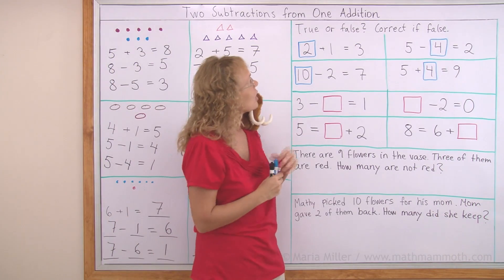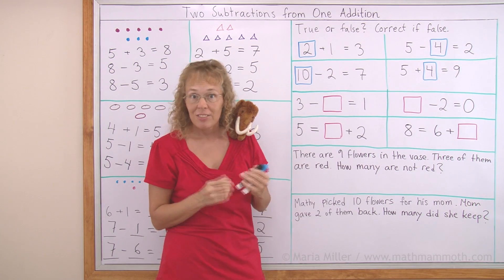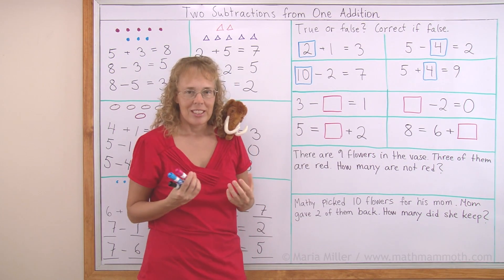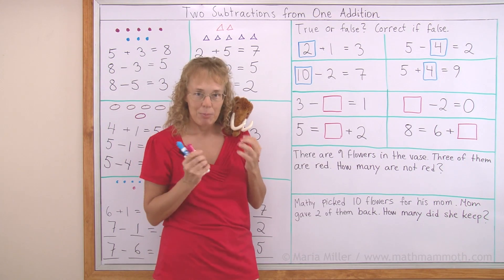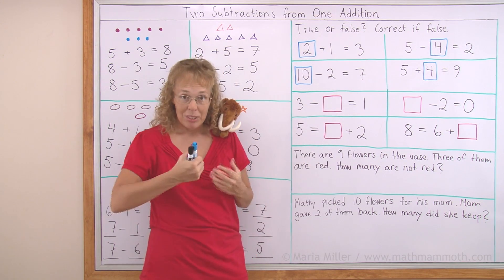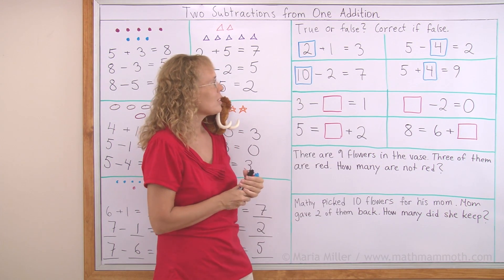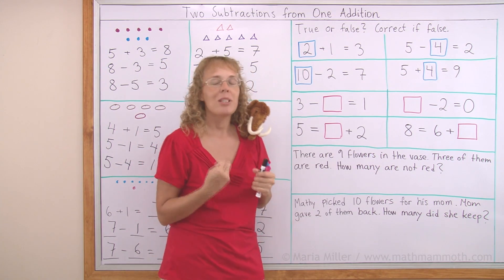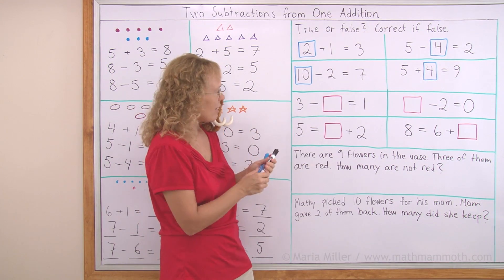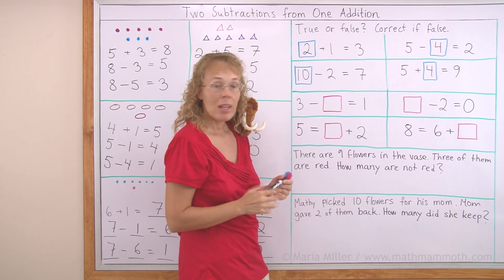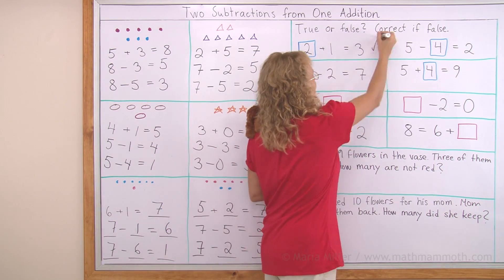Now something different. True or false? Correct if false. These numbers that are in those blue boxes, you can imagine that they had been empty, just like here. And then some student filled in a number into those boxes, and maybe sometimes they made an error. We need to find if they made any errors. Is this true? Two plus one equals three? Yes, it's true. That's correct.